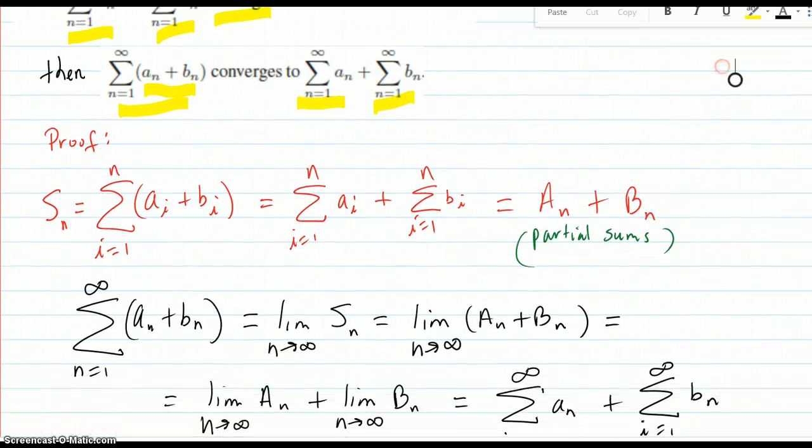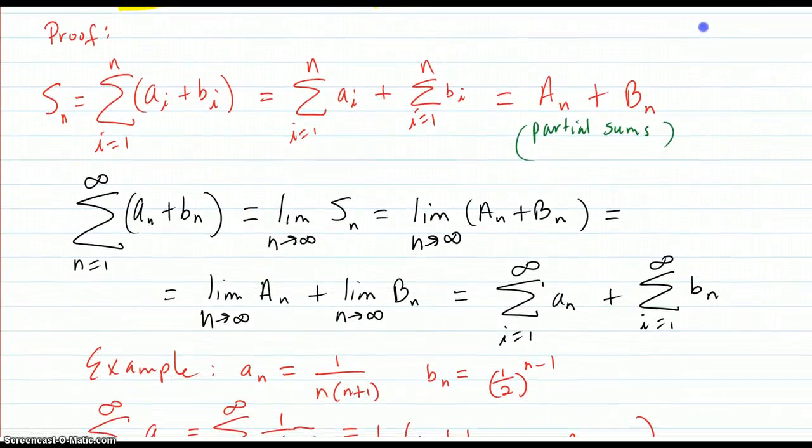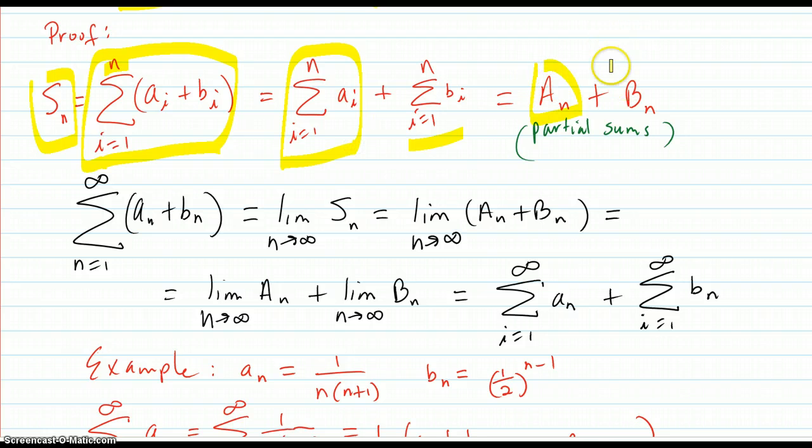The proof: your partial sum Sn for the combo series is equal to this first part here. This is just a finite sum, and sums you can break up. We're going to call the partial sum for the A sequence capital An and similarly for Bn.